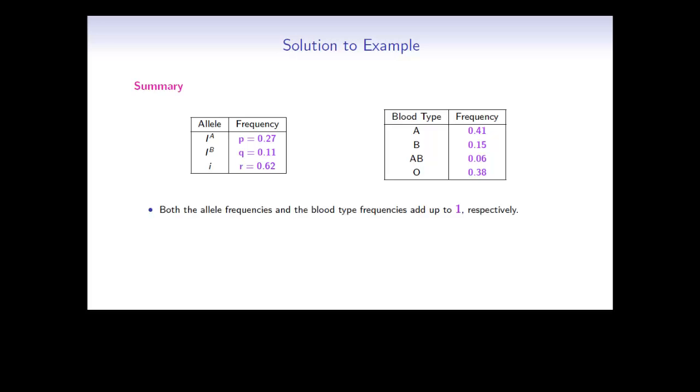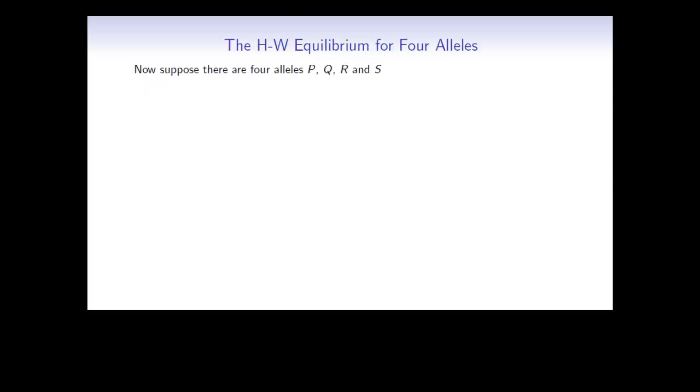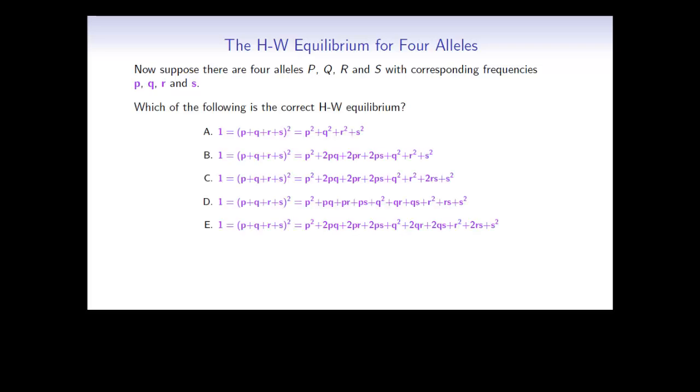The Hardy-Weinberg equilibrium can also be used with 2, or 4, or 5, even more alleles. Suppose that we have P, Q, R, and S with the corresponding frequencies lowercase p, q, r, and s. Why don't you give this a try and see which one of these options is the correct Hardy-Weinberg equilibrium for 4 alleles. Remember that you can use either the Punnett square method or the expansion method.